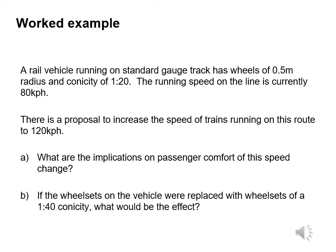Let's now look at a worked example. A rail vehicle is running on standard gauge track and has wheels of 0.5 metre radius and conicity of 1 in 20. The running speed of the line is currently 80 kilometres per hour, and there is a proposal to increase this to 120 kilometres per hour. The first part of the question: what are the implications on passenger comfort of this speed change? The second part: if the wheel sets are replaced with wheel sets of 1 in 40 conicity, what would be the effect?